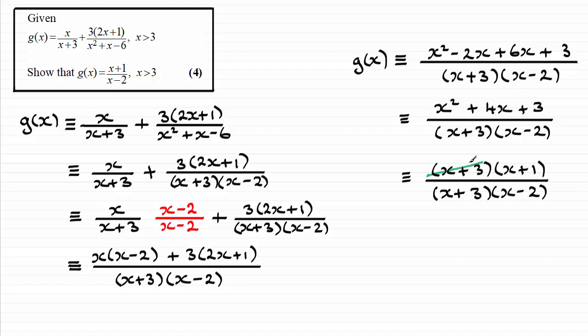So I can divide through top and bottom by x plus 3, going once there, leaving me with what we've got to show: x plus 1 all over x minus 2.